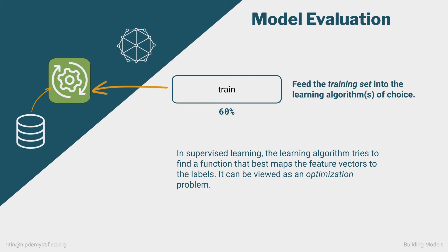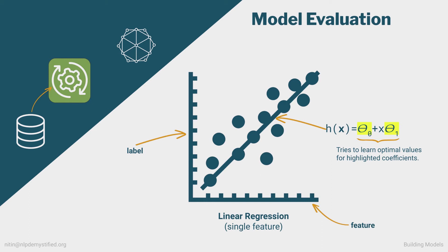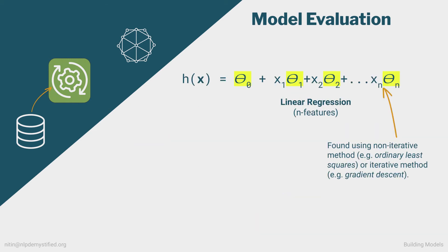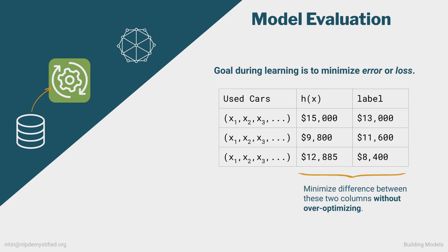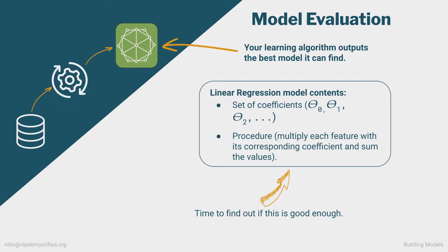In that regard we can view this step as an optimization problem. For example, in linear regression where we're trying to find a relationship between features and a real number, the learning algorithm will try to find optimal values for the coefficients. In this example where we have only a single feature, the algorithm tries to fit a function h(x) by finding theta_0 for the y-intercept and theta_1 for the single feature x. These coefficients affect the y-intercept and slope of the line until the one is found that best fits all the data points. Typically in linear regression, ideal coefficient values are found using either ordinary least squares, or if you have a large dataset of many features, an iterative method like gradient descent, which we'll cover when we talk about neural networks. The algorithm is trying to find coefficient values which minimize the difference between its predictions h(x) and the actual labels — this difference is referred to as the error or loss — and it tries to do this without over-optimizing. Once it's found the best set of coefficients it can, it outputs a model.